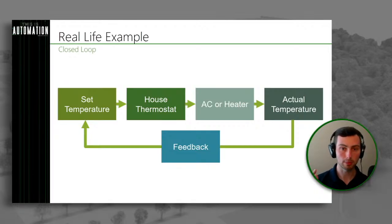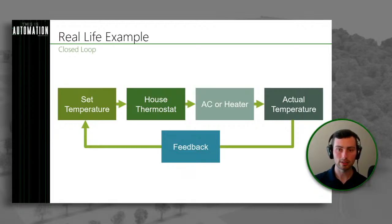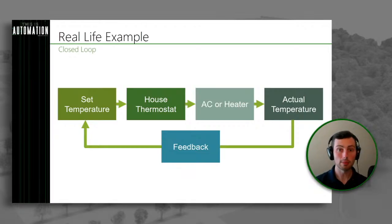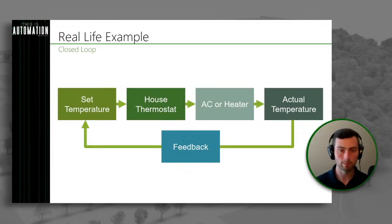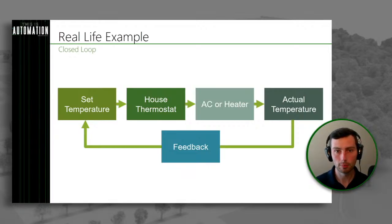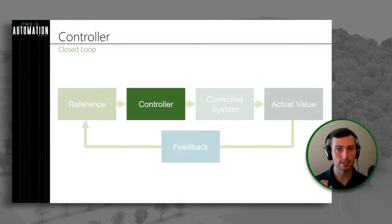That's where closed loop comes into play. We set it to 72, but our house is actually 75, so we need to cool it down a little bit. Because we have closed loop, we're getting feedback from the actual temperature and can change the way we're controlling it based on the behavior of that error. The difference between the actual and the reference is called the error. Depending on whether that error is really big or changing over time, we can make changes to the way we're controlling.